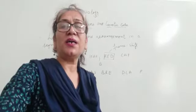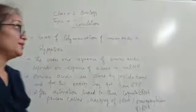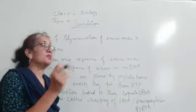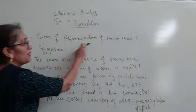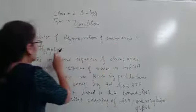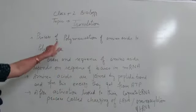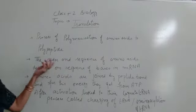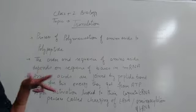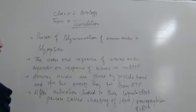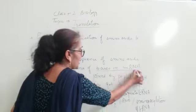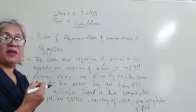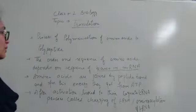Next is translation. Translation ka matlab hai ki, RNA se amino acids kaise bane. Right? Process of polymerization of amino acids to the polypeptide. What is translation? It is the process of polymerization of amino acids to polypeptide. Now, a polypeptide amino acids kaise bane ki, kya sequence raha us me? That depends on the sequences of the bases in mRNA. Messenger RNA kaise nucleotides leke a raha hai? Us me depend karega ki, kis tarah ke naye amino acids sa yaar hooghe.